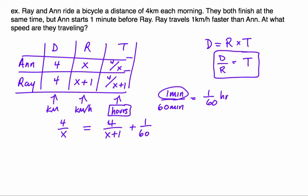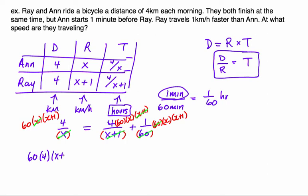Solving it is coming up with a common denominator, which is x times (x+1) times 60. Each of these has to multiply by 60 times x times (x+1), and some things will cancel. In the first one, the x's, and the (x+1)'s, and then the 60's. That will leave me with 60 times 4 times (x+1) equals 4 times 60 times x plus x times (x+1), or 240x + 240 = 240x + x² + x.